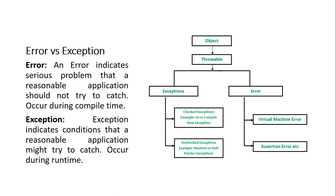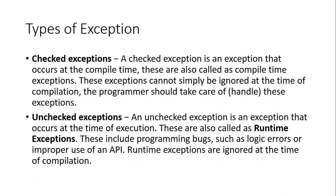Let's discuss about types of exceptions. The first type is a checked exception — the checked exception is an exception that occurs at compile time, also known as a compile time exception, which occurs due to a mistake of the programmer. An unchecked exception is the exception that occurs during the execution of a program, also known as a runtime exception — for example, array out of bound error, arithmetic error.